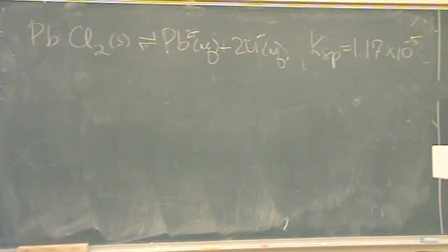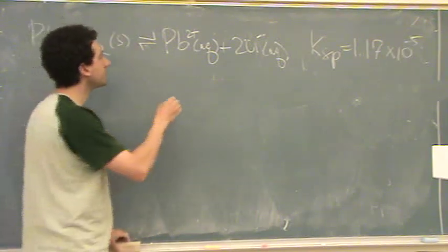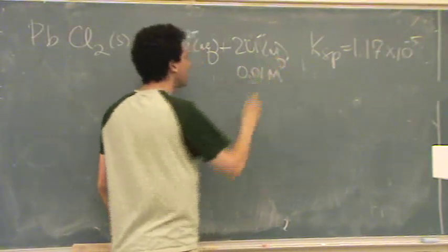And then does it give you the molarity of something? Yes. Okay, which one? The molarity of the chloride ion is 0.01 molar.